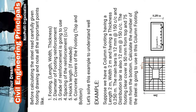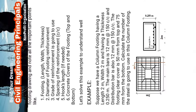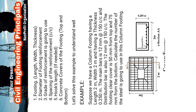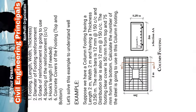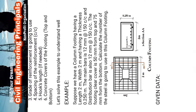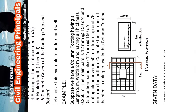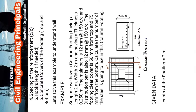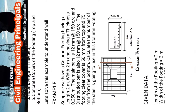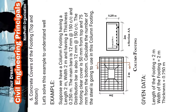Number six, concrete cover of the footing — top and bottom. Now let's solve an example. Suppose we have a column footing having a length of 2 meters, width 2 meters, and thickness 0.250 meters. The main bar is 20 millimeter at 150 center to center, and the distribution bar is also 20 millimeter at 150 center to center. The footing clear concrete cover is 50 millimeter from the top and 75 millimeter from the bottom.